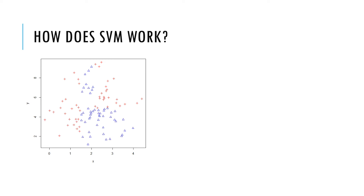Let's look at how SVM works pictorially. You have two classes in the data — red crosses and blue triangles — and they are all mixed up. You cannot draw a line or boundary in this data because some blues are here, some crosses are here. Other machine learning techniques can solve this problem, but SVM is considered to solve this kind of problem more efficiently and with less calculation.